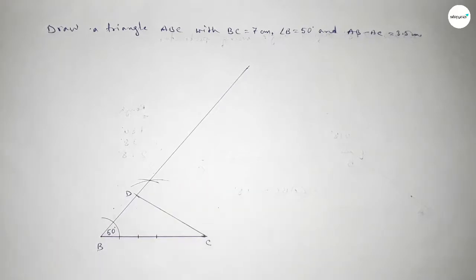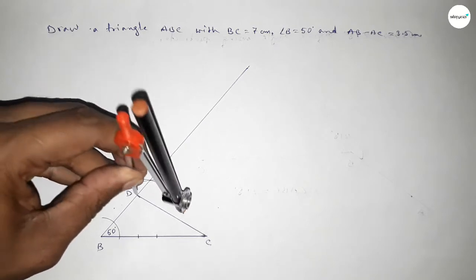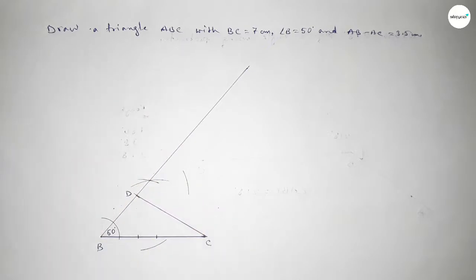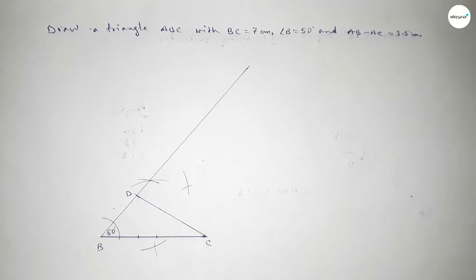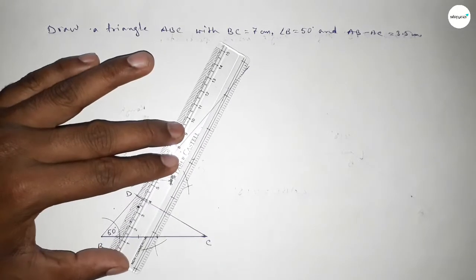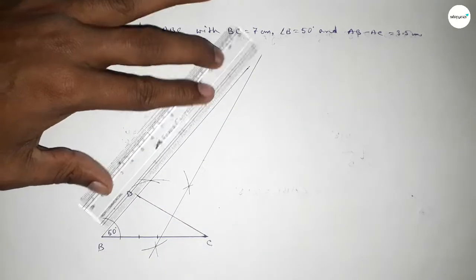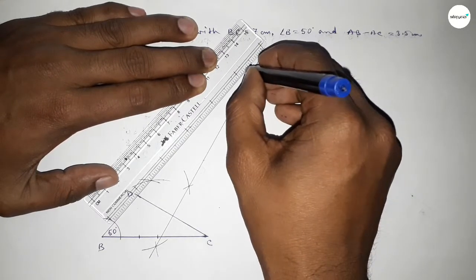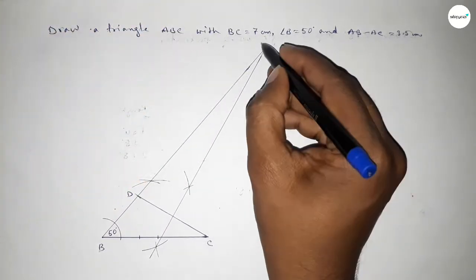Now joining C and D. We have to bisect the line CD. Putting the compass on point D, taking greater than half of CD, and drawing an arc. With the same length, putting the compass on point C and cutting on both sides. Both curves intersect at two points. Joining these two points forms the perpendicular bisector, extending the line as needed.